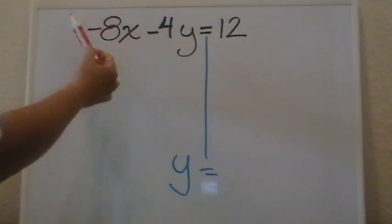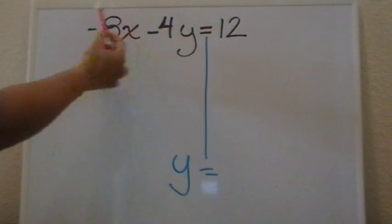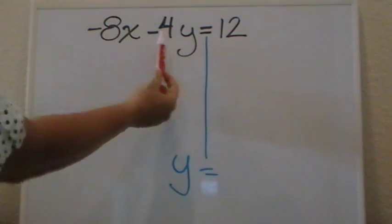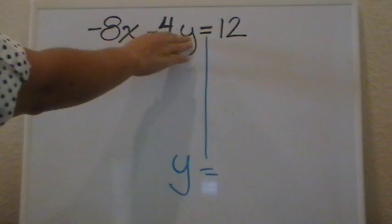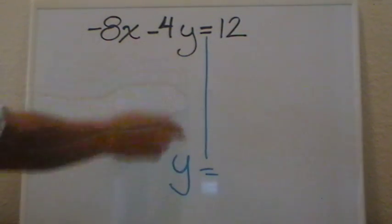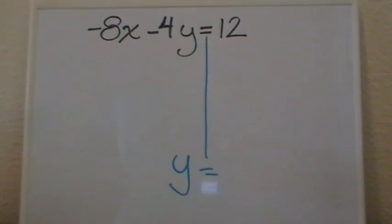I need to cancel negative 8x, not negative 8, all of it together, negative 8x and a negative 4. The negative 4 is the coefficient of the variable, in this case y, that I want to isolate, so that one we will leave for last.